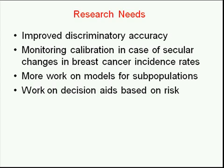A question from Borsika Rabin in Denver: Do we currently have a similar listing of prediction models for prognosis as the one we have for cancer risk? We do not yet, but we're working on it right now. There are a lot of models out there for prognosis and outcomes as well, and we're working on including them.